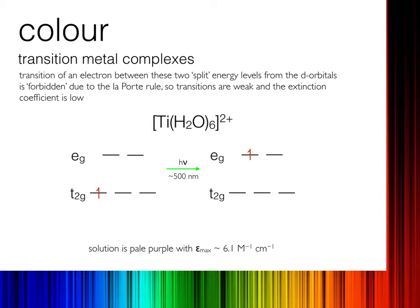Here I show an example with titanium. In the hexa-aqua complex of titanium 2+, titanium just has one electron in its d-set because electrons are removed from the s-orbitals first. According to Hund's rule, that electron sits in the lowest energy level. If I pass 500 nm light through this titanium solution, I will promote that electron into the higher orbital set, the EG set. However, this is a spin-forbidden transition because the electron is moving between two d-orbitals, so the extinction coefficient is quite low — just 6.1 per mole per centimetre.